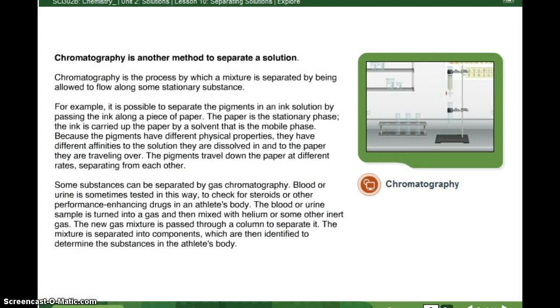So chromatography is another method to separate a solution. Chromatography is the process by which a mixture is separated by being allowed to flow along some stationary substance. So before in the lab, we did it on paper. Here they did it through a column, like a sand column. For example, it is possible to separate the pigments in an ink solution by passing the ink along a piece of paper. The paper is the stationary phase. In other words, it's the part that doesn't move. That's what stationary means. The ink is carried up the paper by a solvent, such as water, that is in the mobile phase. It's called mobile phase because it moves. Because the pigments have different physical properties, they have different affinities to the solution they are dissolved in and to the paper they are traveling on. So basically affinities, meaning they might go faster, slower, they might be more attracted or not attracted, depending on the type of molecule they are. The pigments travel down the paper at different rates, separating from each other.